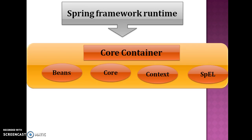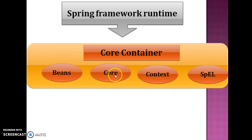Let's start with the first category: core container. This category contains five modules. In this picture you can see only four modules, but implicitly the Spring core container contains five modules — core, context, and one more module called context support, and finally the Spring Expression Language module.